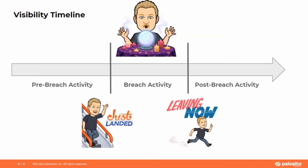The visibility timeline is pretty basic. There's going to be activity occurring on the endpoints and in the network prior to a breach or breach attempt. Then if the adversary does a spearfish or it's an insider starting malicious activity, you enter the breach activity window. Whatever activity occurs, at some point either the adversary is blocked out and gives up, or they complete their mission and start removing themselves — deleting things, clearing logs, removing evidence — and then exit, with things going back to post-breach activity that looks like normal operations.